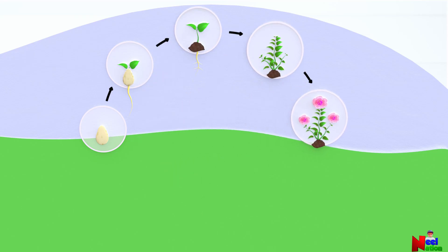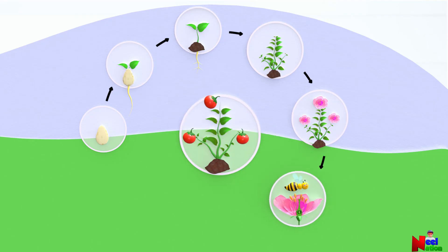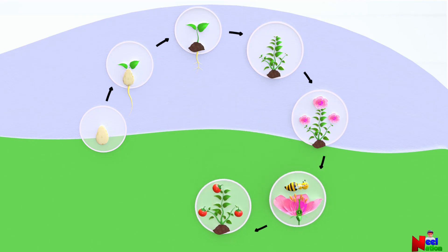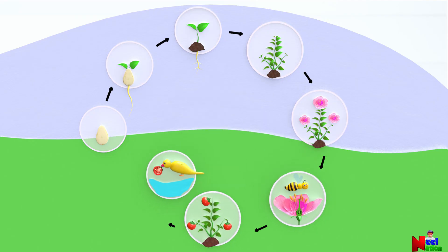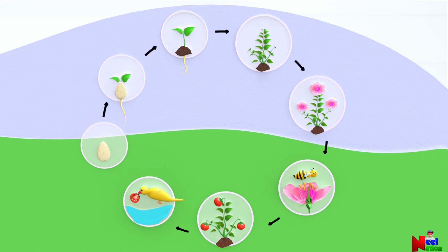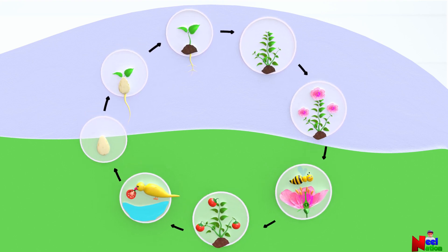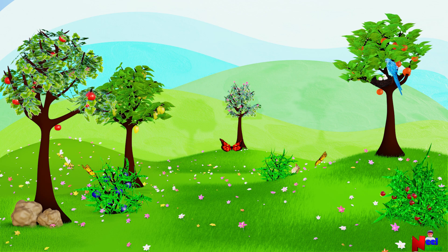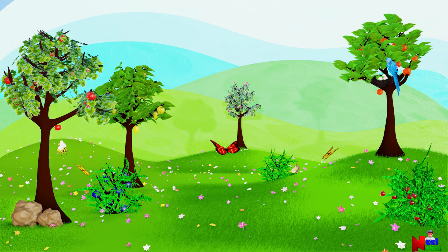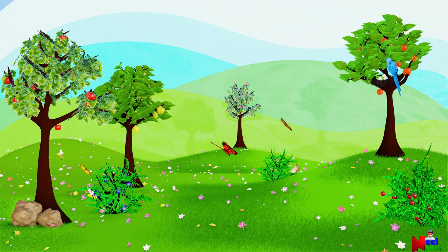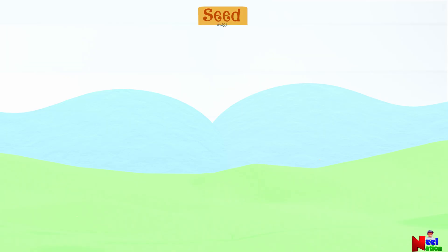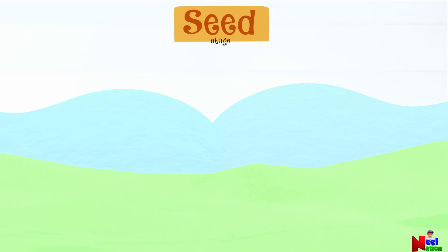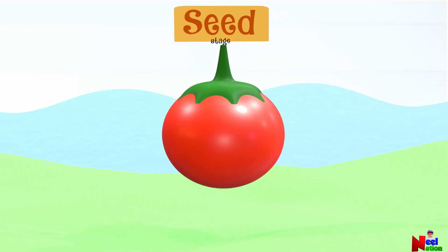Plants start as tiny seeds, then grow into mature plants that can make more seeds. This amazing cycle keeps plants alive and thriving, filling the world with greenery. Let's look at the different stages of a plant's life cycle. The first is the seed stage — most plants begin their life cycle as seeds.